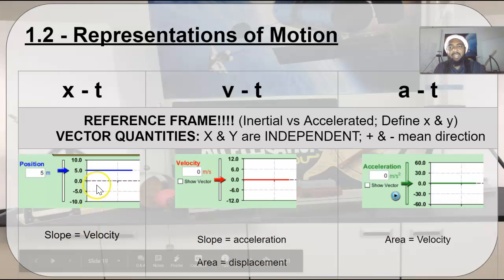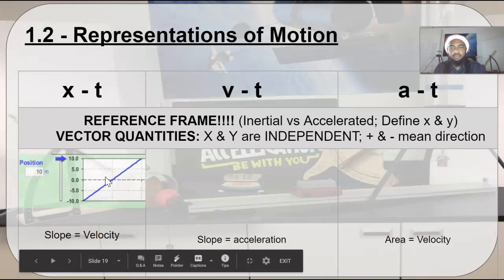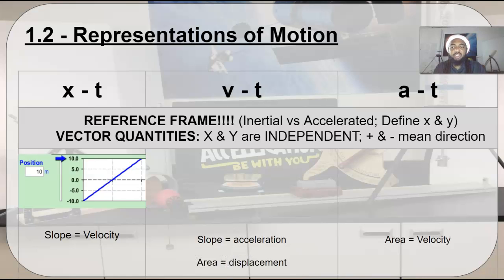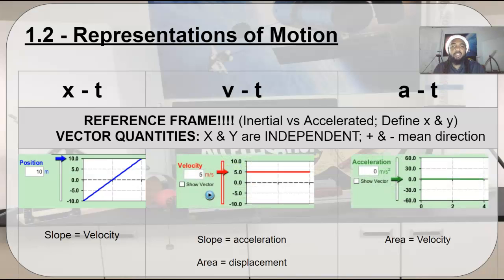What if we had a constant velocity? If we had a constant velocity, that means that our position time graph is a straight line. Our slope for a straight line is a constant value, so that would be giving us a value on our velocity graph, but our velocity is not changing, so it will be a flat line at whatever value. Again, the slope of a flat line is zero, so we have no acceleration.